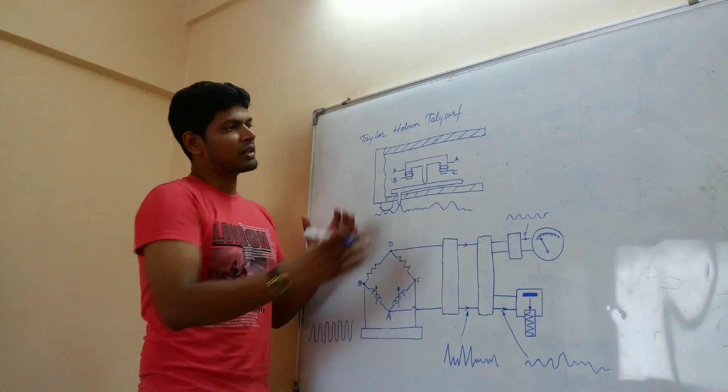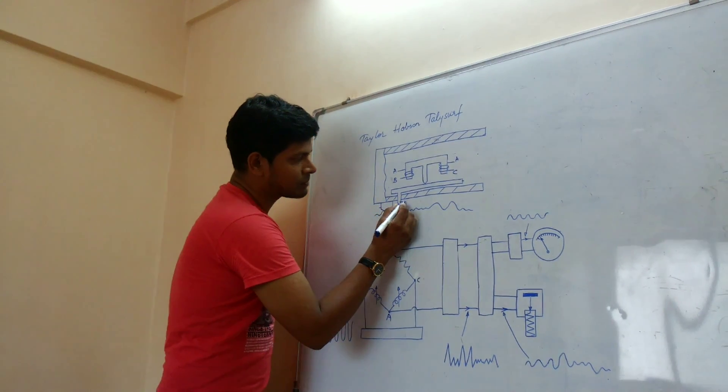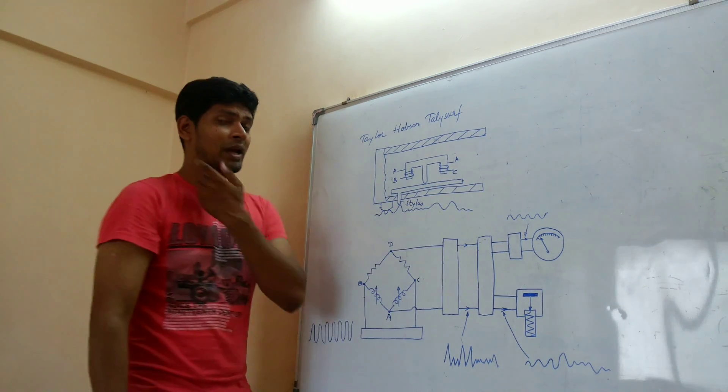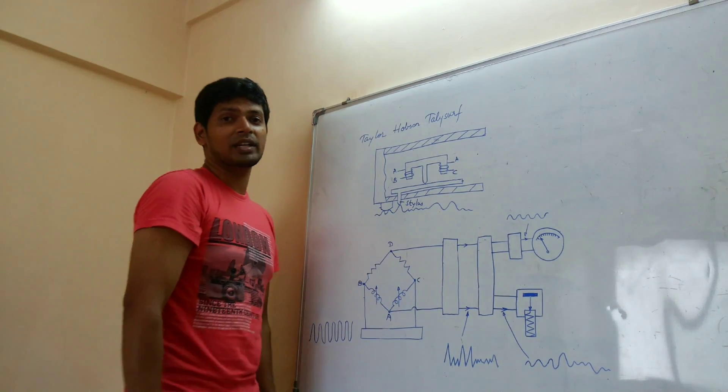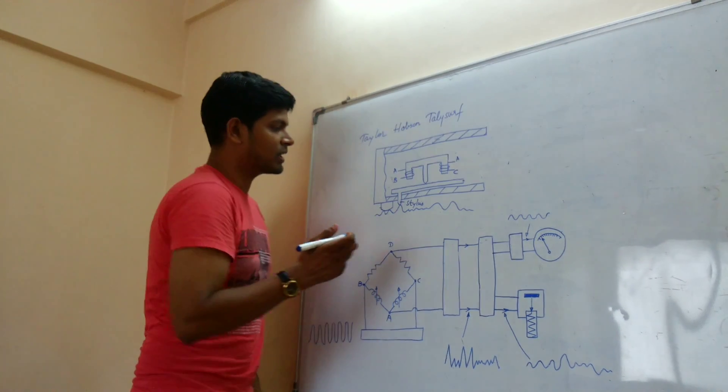First let us start by the diagram or the figure. This is stylus which will move along the jaw. It is made up of diamond and the dimension is 0.002 mm, that is the tip radius.